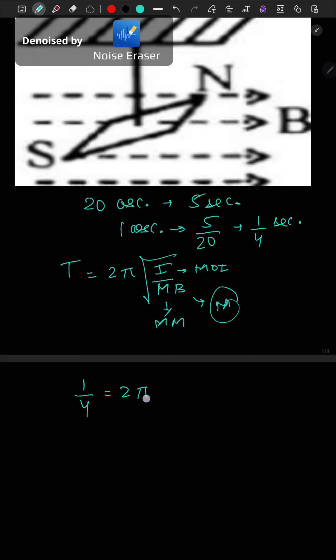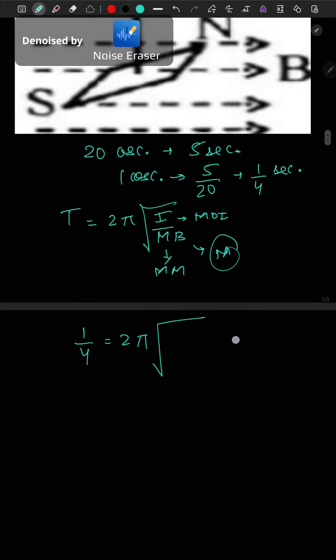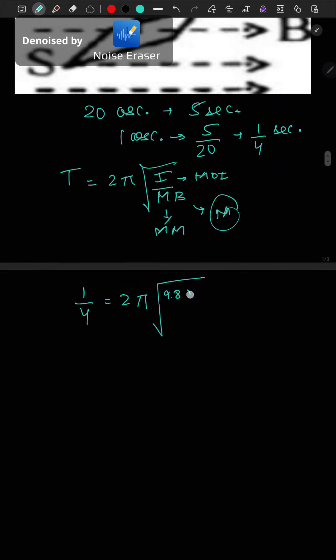It is 1 by 4 equals 2π under root. Here moment of inertia is given as 9.8 into 10 to the power minus 6. M and magnetic field is given as 0.049.